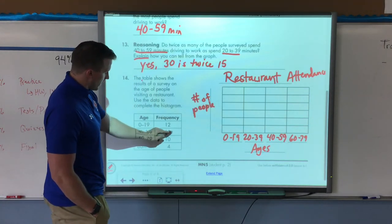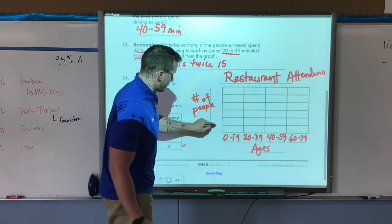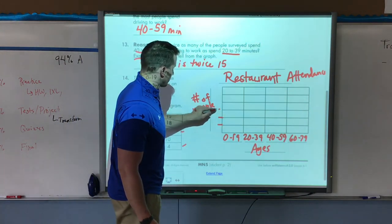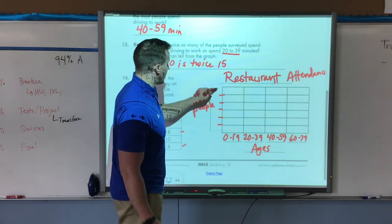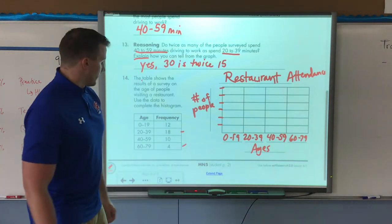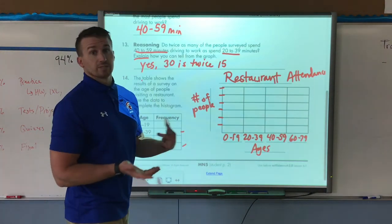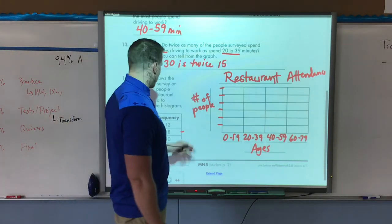Now you can see the highest number is 18, the lowest number is 4. And again, I have one, two, three, four, five, six rows. So I need to figure out, okay, I can count by threes because three times six is 18. So I could go three, six, nine, 12, 15, and 18.